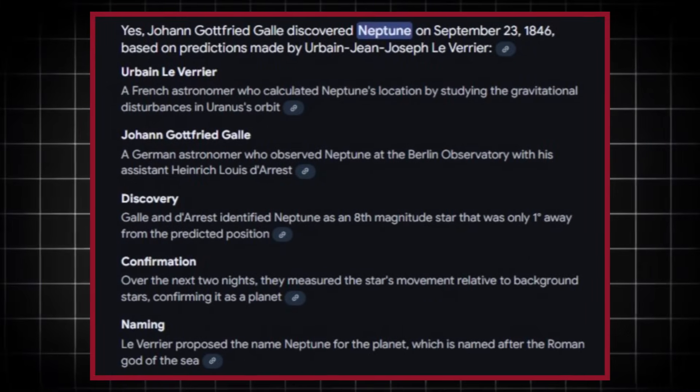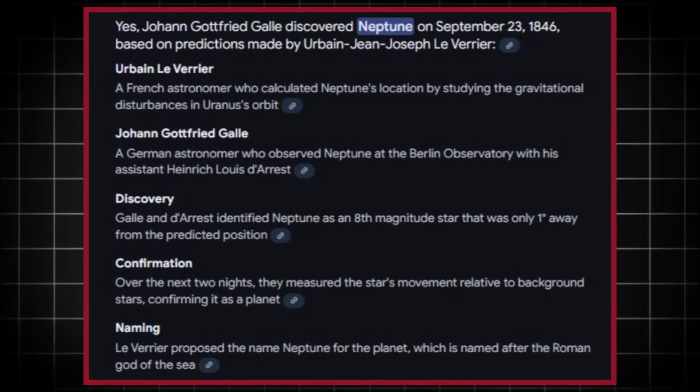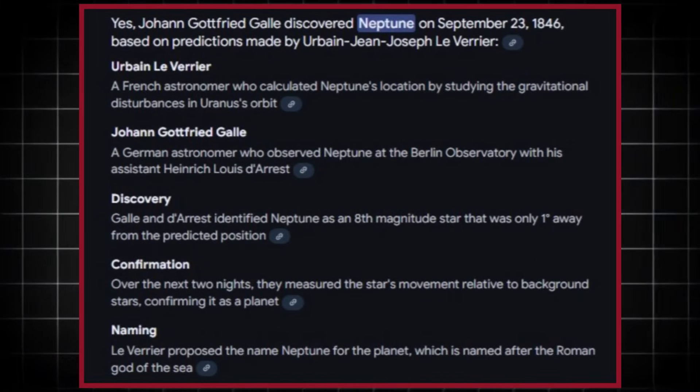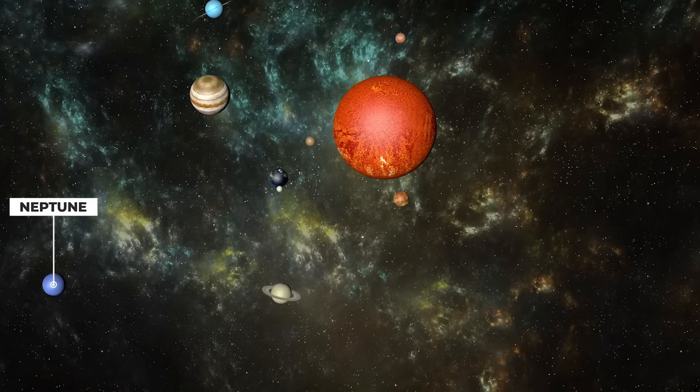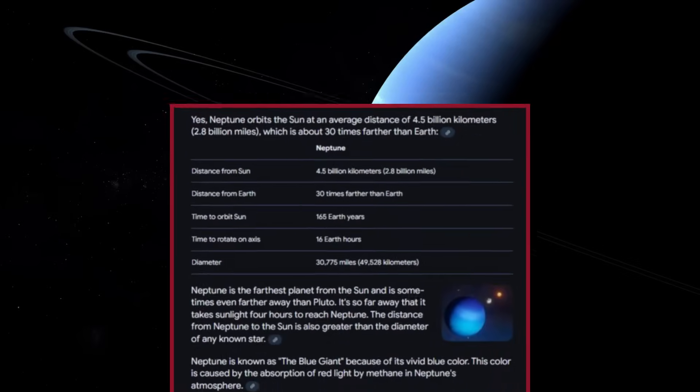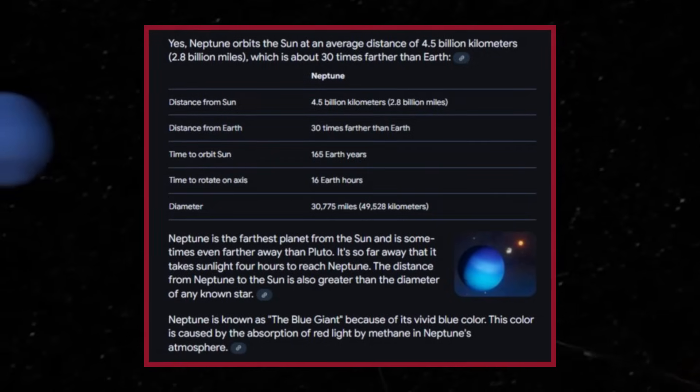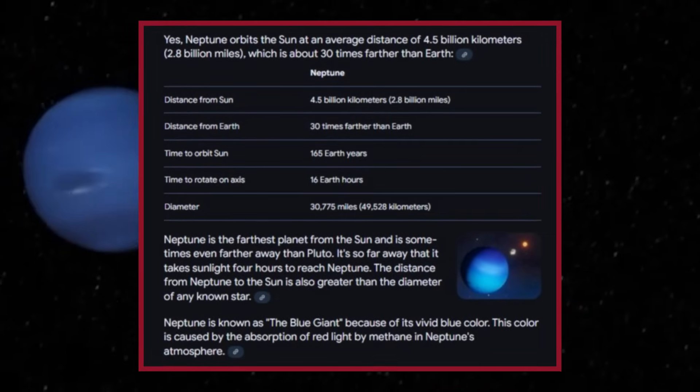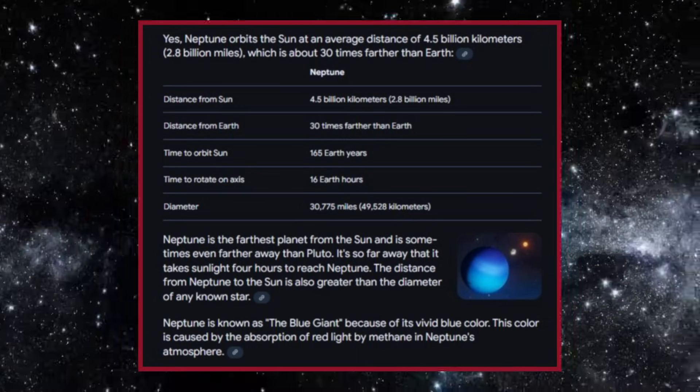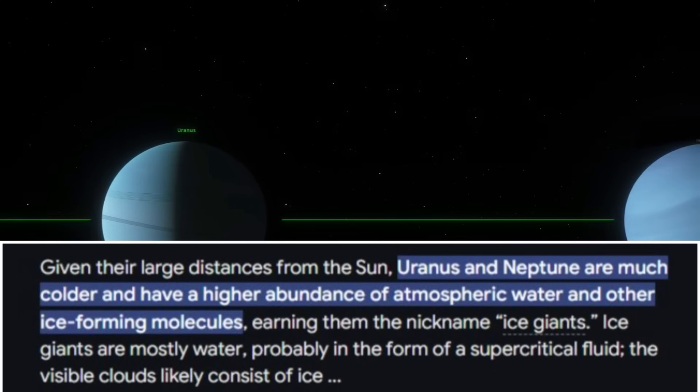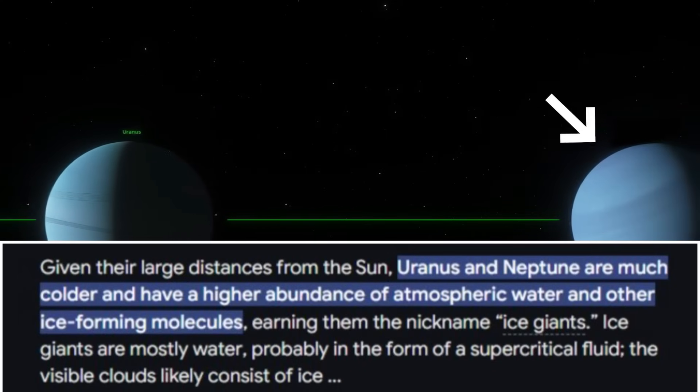Discovered in 1846 by Johann Galle, based on predictions made by Urbain Le Verrier, Neptune holds the title of the most distant planet in our solar system. It orbits the sun at an average distance of 4.5 billion kilometers (2.8 billion miles), approximately 30 times farther than Earth. This makes it a member of the ice giant class, alongside Uranus.